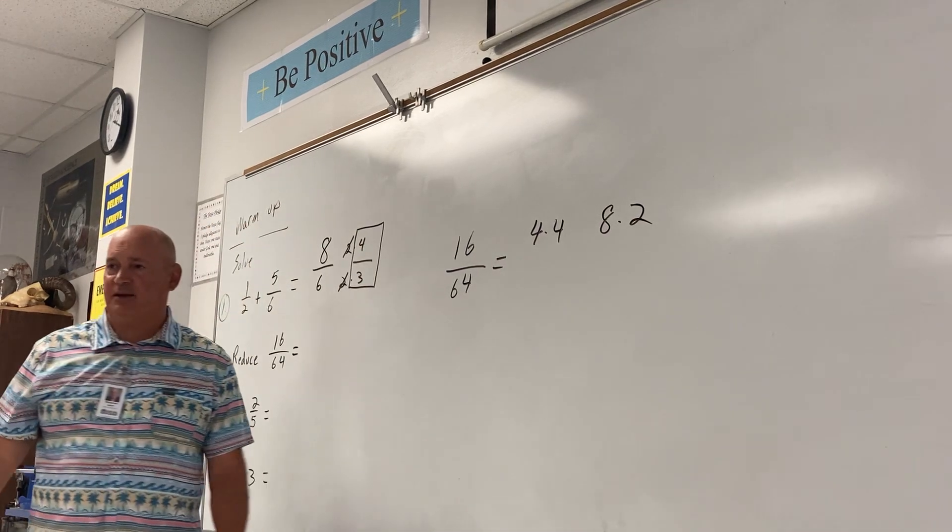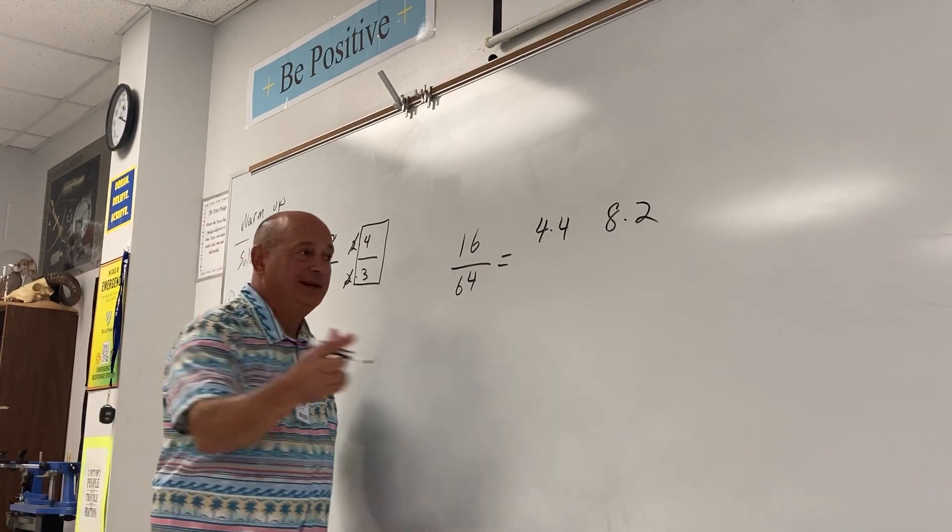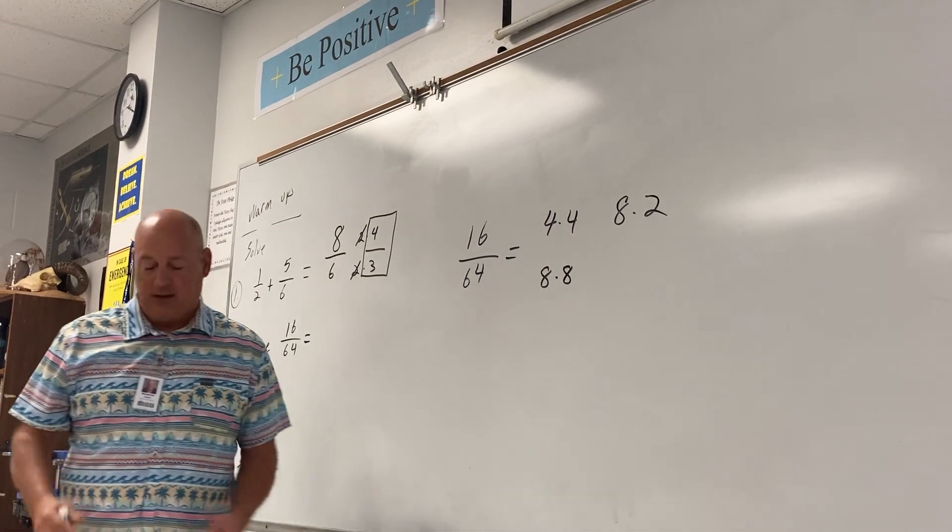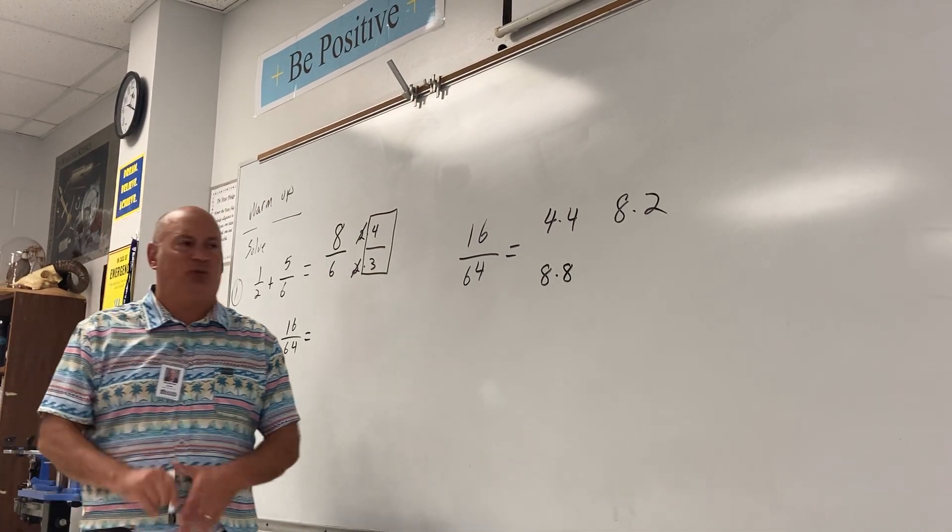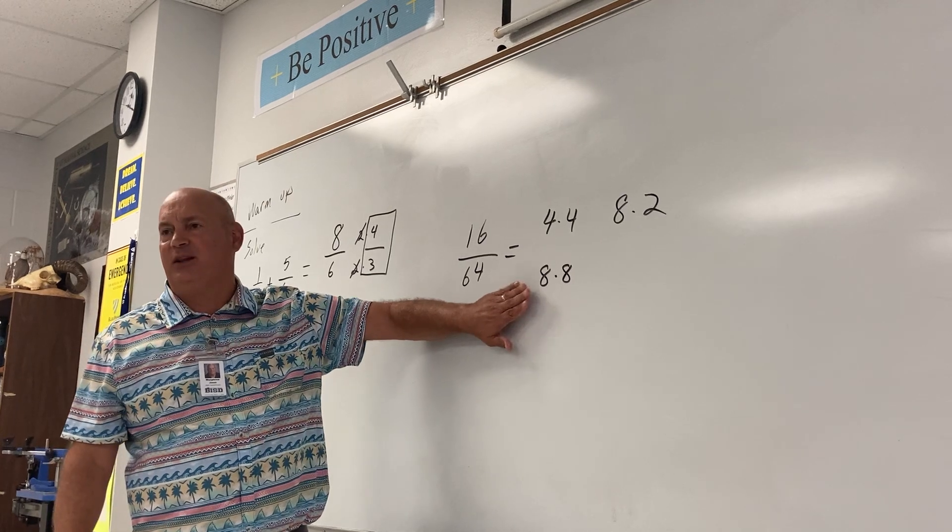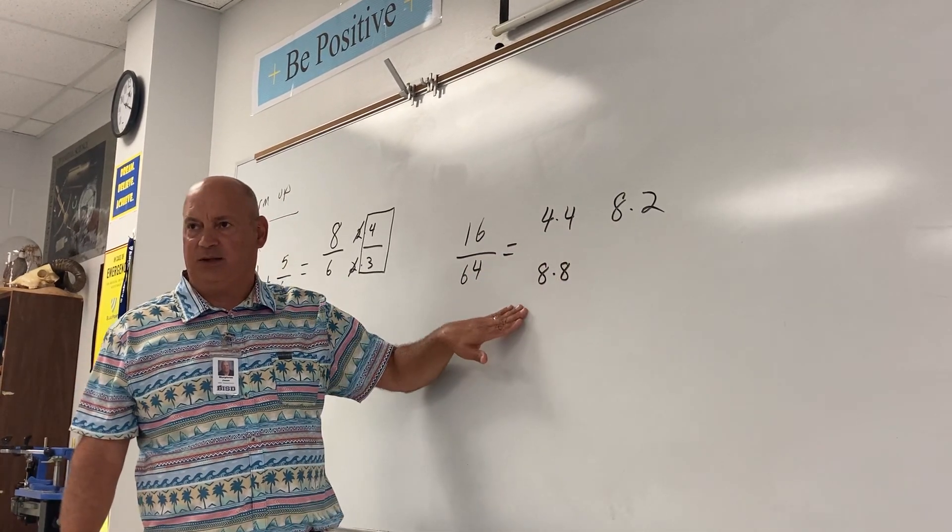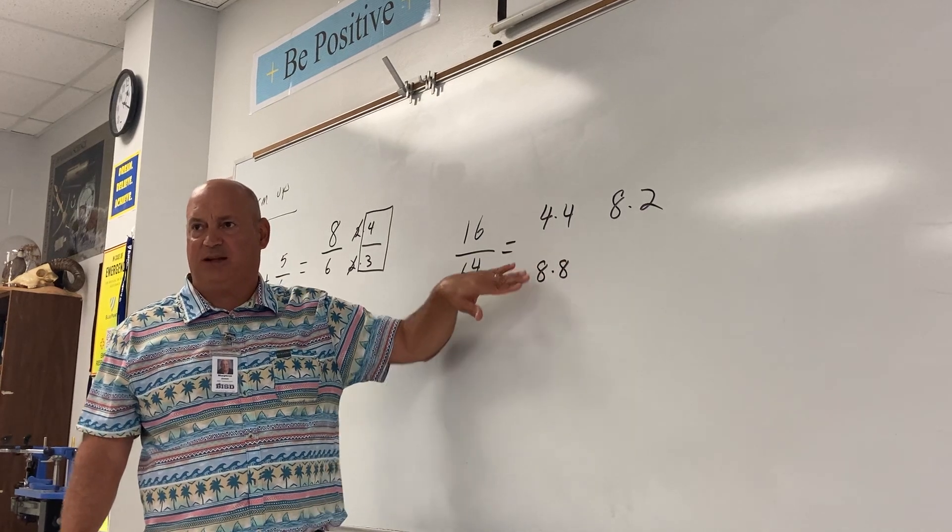Give me some numbers that multiply together to make 64. Eight times eight. Eight times eight. Eight would have probably been the first one I thought of as well. Are you with me? The key to reducing is we want to have the same number on the bottom as we have on the top. Are you with me? Don't you see an eight on both the bottom and the top?